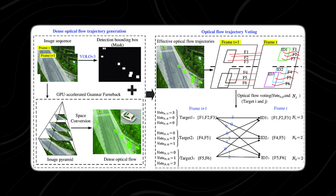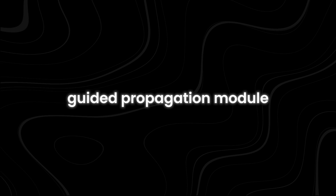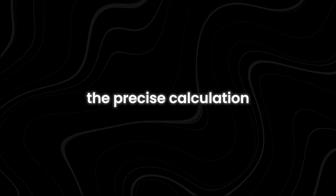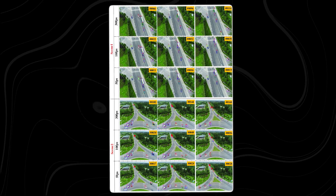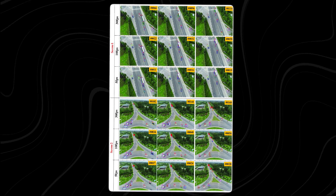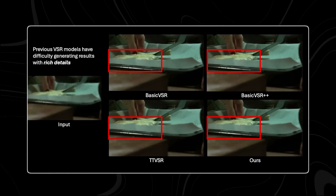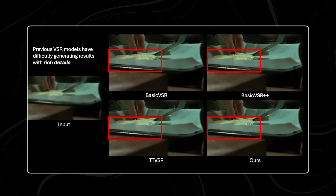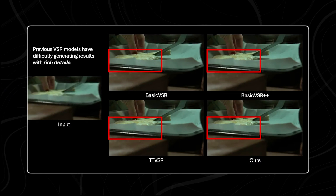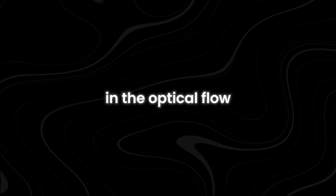Furthermore, the effectiveness of Video Gigagan heavily relies on the accuracy of its optical flow estimation. The quality of the flow-guided propagation module is contingent upon the precise calculation of optical flow between consecutive video frames. Issues such as occlusions, complex scenes, and rapid movements can often impede the accurate estimation of optical flow, consequently leading to inconsistencies in the temporal consistency of the upscaled videos. Therefore, achieving optimal results with Video Gigagan necessitates meticulous attention to detail and careful consideration of potential sources of error in the optical flow estimation process.